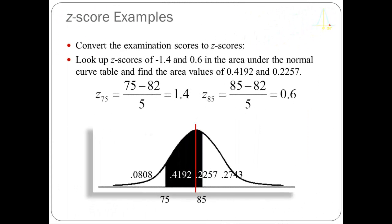Step one: convert the examination scores to Z-scores. Z sub 75 is equal to 75 minus 82 divided by 5, giving a Z-score of 1.4. Notice I didn't put the minus sign in — technically it's minus 1.4, but my Z-table only has positive values, so I left it as positive and will remember it's below the mean. My Z-score for a raw score of 85 is 85 minus 82 divided by 5, or 0.6.